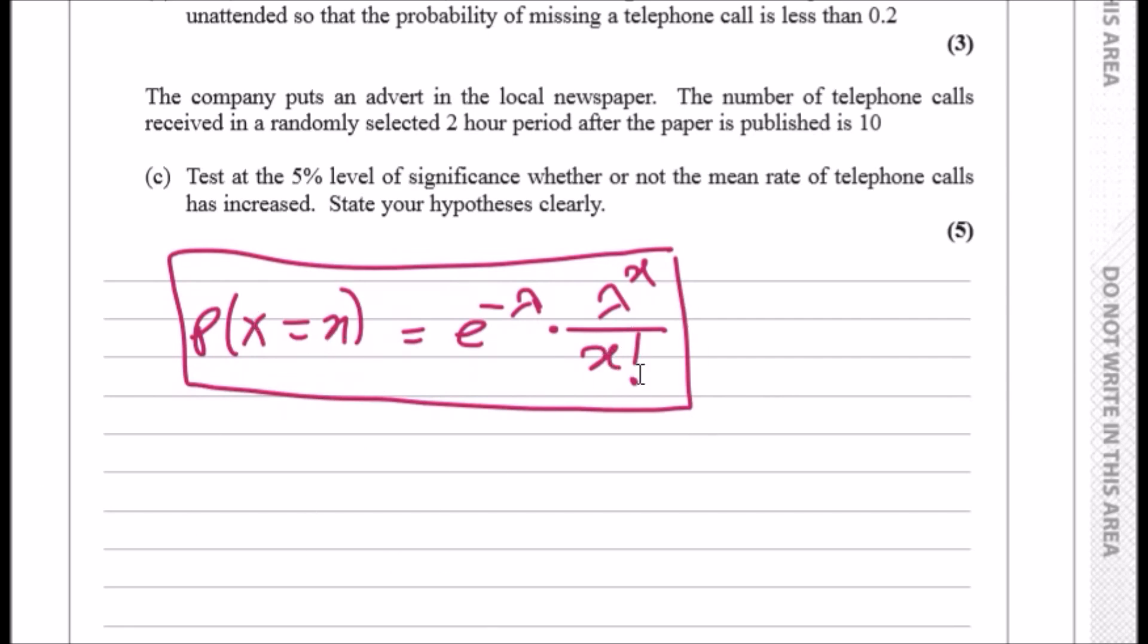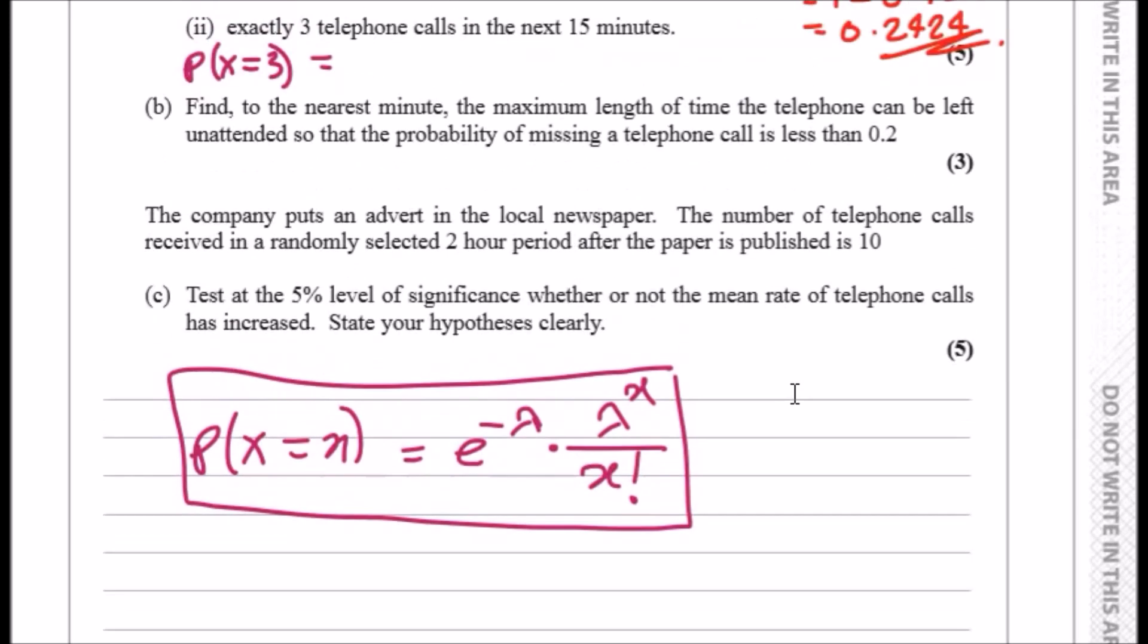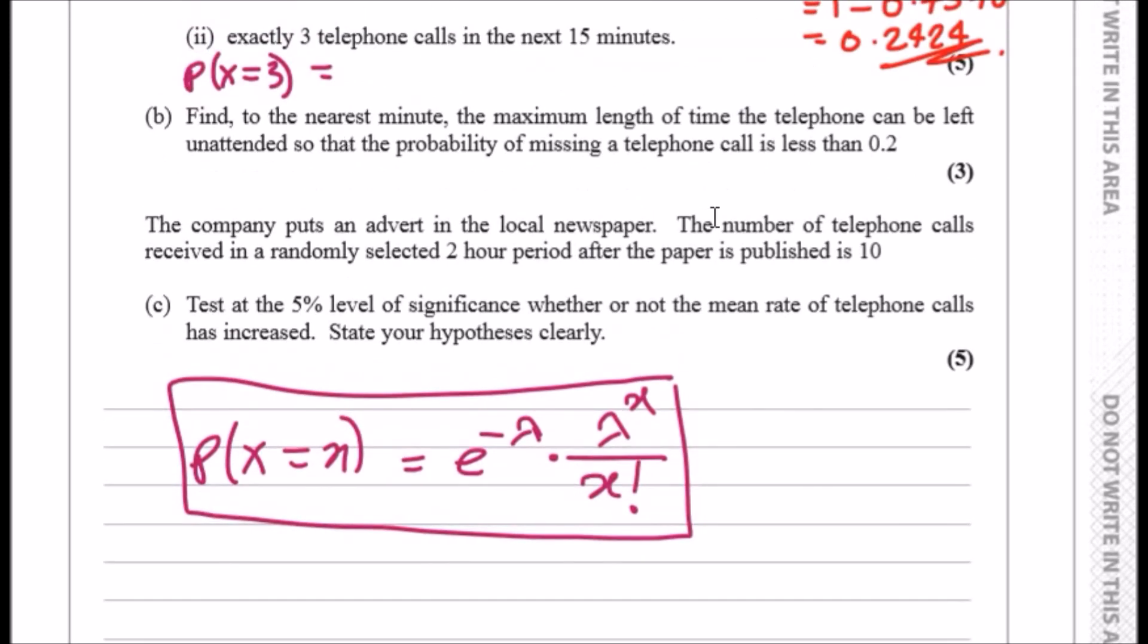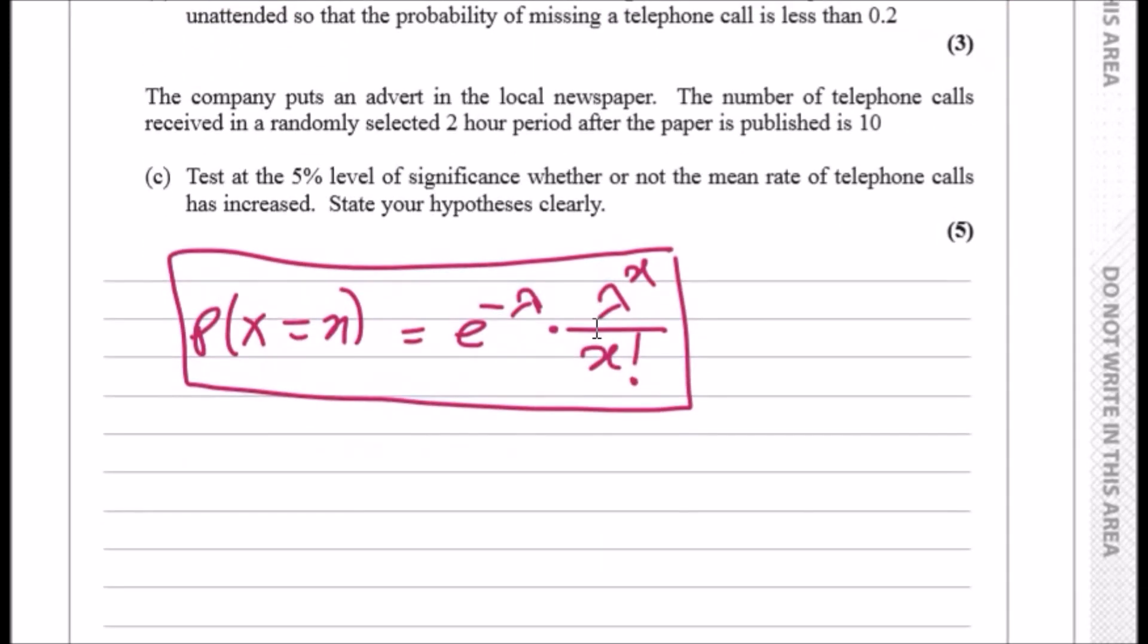So now plug this in. For x equals three we're going to have probability x equals three which is equal to e to the minus lambda which is 0.625, and then times 0.625 to the power 3 over 3 factorial. You should get 0.0218, I believe, yeah, so I'll go something like that.